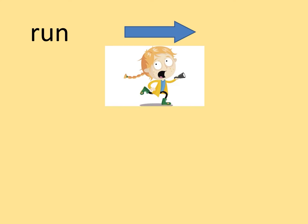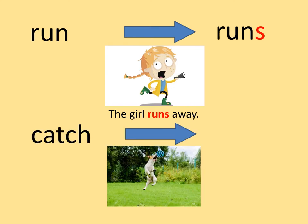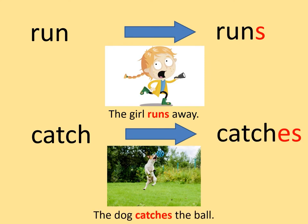We also add s and es to words when we want to change a verb — that's one of our doing words — into the present tense, that means it's happening right now. So if I had the word run, I would turn it into runs if it was happening now, so it would say the girl runs away. And if I had the word catch and it was happening right now, I might say the dog catches the ball, so you can see that I've added es to the word catch to make it catches.